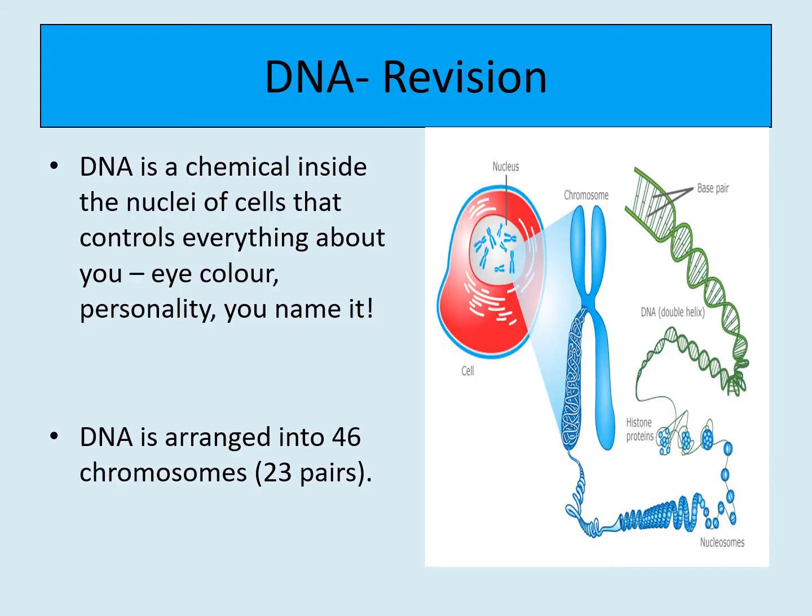DNA is a chemical inside the nuclei of the cell. It controls everything about us — our eye colour, our personalities. DNA controls it. DNA is arranged into 46 chromosomes which is 23 pairs, and we should know that from cell division. But where do we get this DNA from? We get half of the DNA from our mum and we get half of the DNA from our dad.